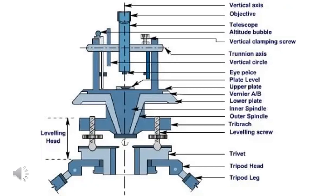The parts of the theodolite include: vertical axis, objective, telescope, altitude bubble, vertical clamping, trunnion axis, vertical circle, eyepiece, plate level, upper plate, Vernier A and B, lower plate, inner spindle, outer spindle, tribar, leveling screw, trivet, tripod head, tripod leg, and leveling.